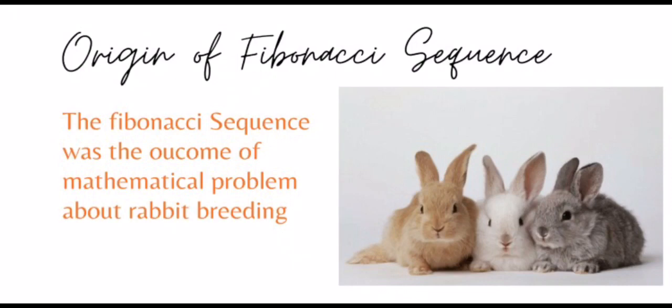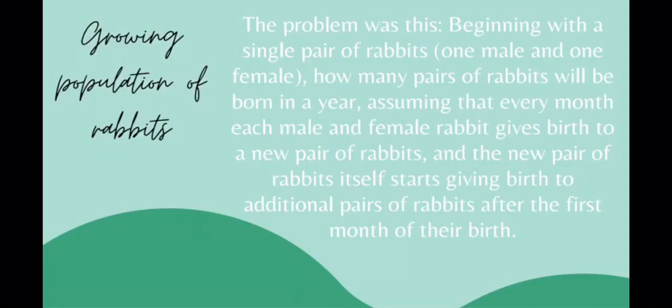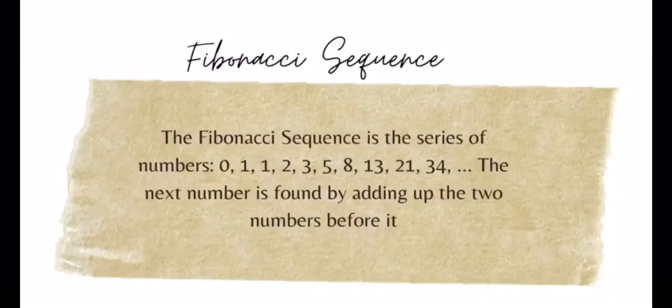The origin of the Fibonacci sequence was the outcome of a mathematical problem about rabbit breeding. The problem is: beginning with a single pair of rabbits — one male and one female — how many pairs of rabbits will be born in a year, assuming that every month each male and female rabbit gives birth to a new pair, and the new pair itself starts giving birth after the month of their birth?